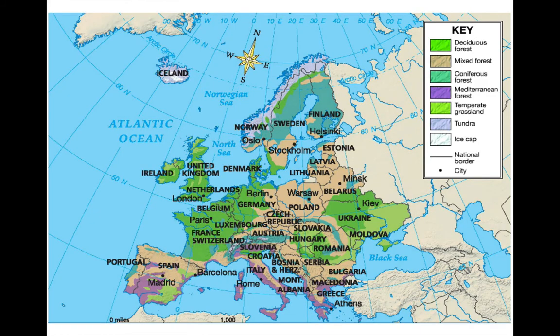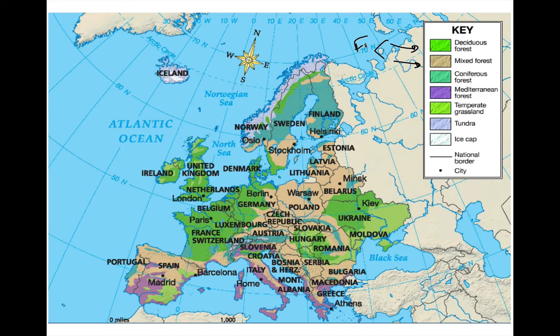The first thing we need to understand is the size of Europe. If we look at Europe on this map it looks very large, but if we looked at a world map, Europe is quite small. By looking at this, we see that the area in which they could farm is not great — it's what is located in the green area, the deciduous forest and mixed forest. These are really the areas where they farmed.